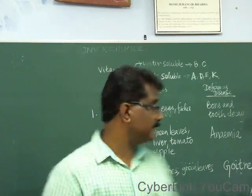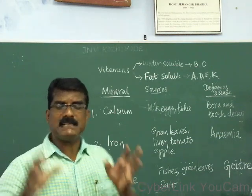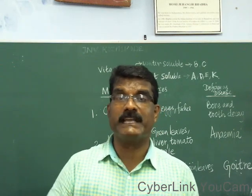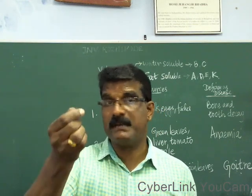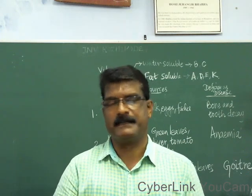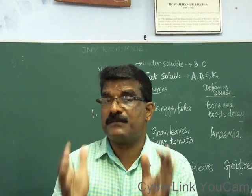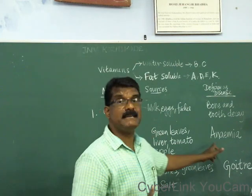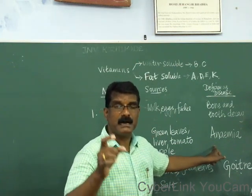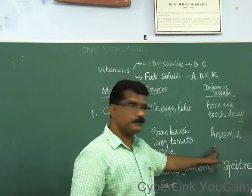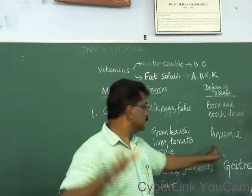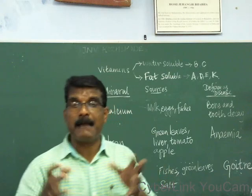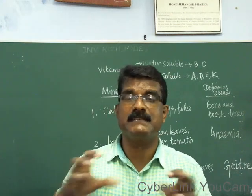Another mineral is iron. Iron is very essential for red blood cell formation — RBC formation. Iron is essential for hemoglobin formation. Hemoglobin is a pigment that gives the red color to our blood. If there is no sufficient RBC or hemoglobin, that leads to a disease known as anemia. Deficiency of iron causes anemia. To prevent anemia, you have to include a lot of green leaves, liver, tomato, apple, and many fruits and green leaves in your diet.